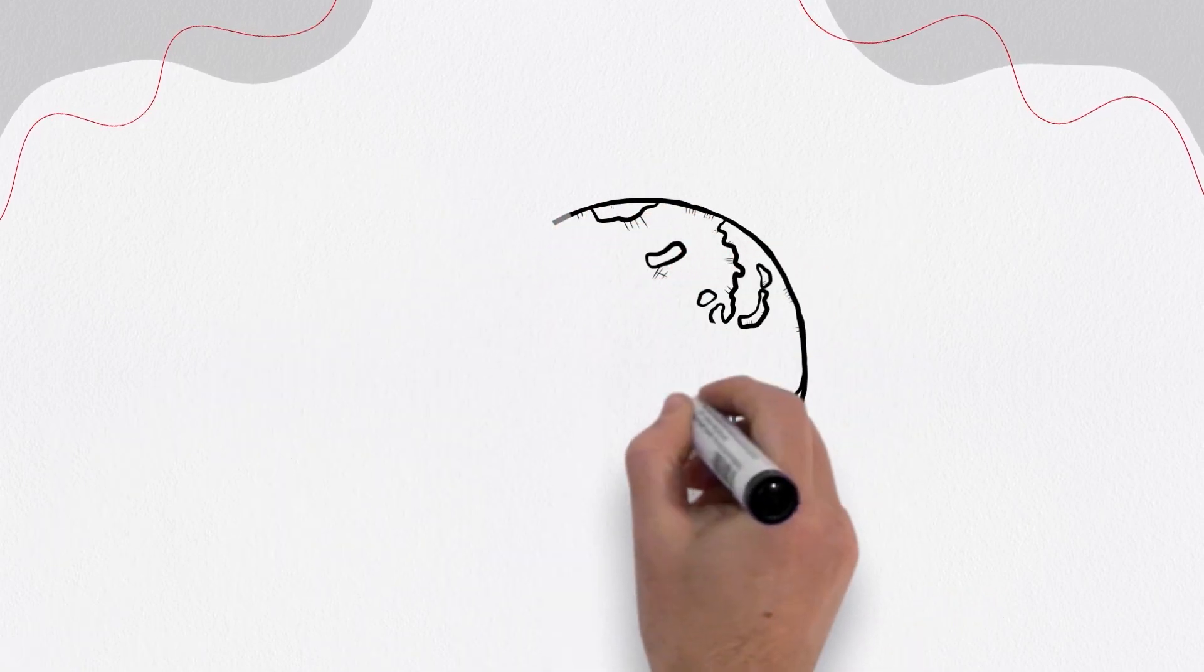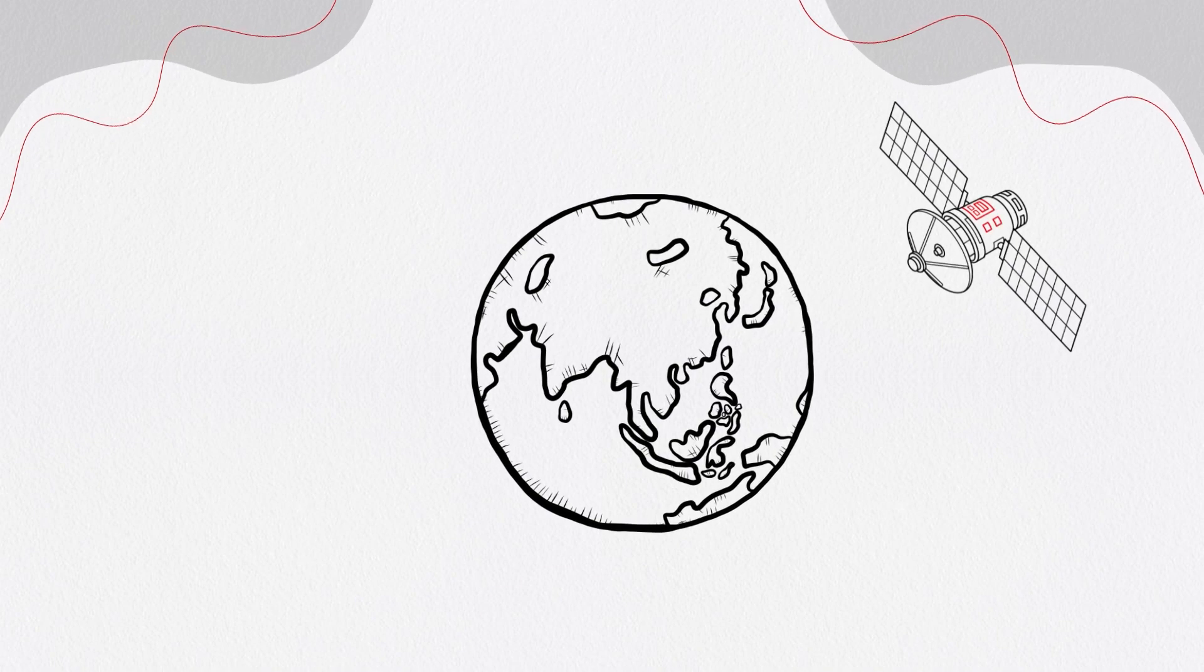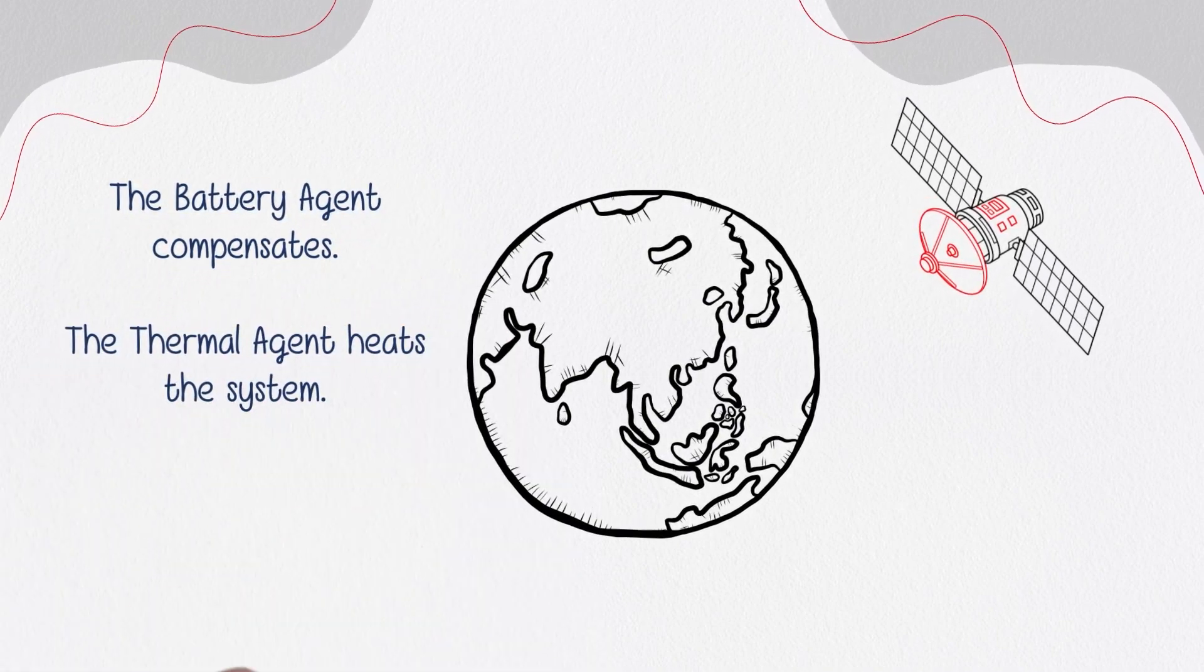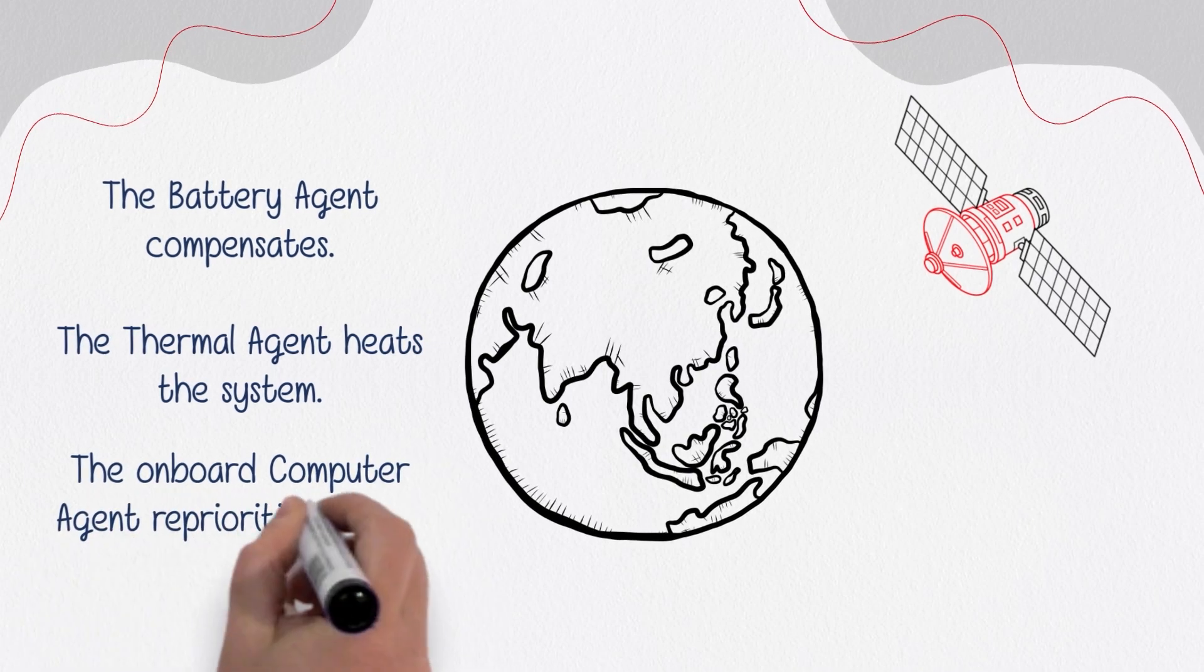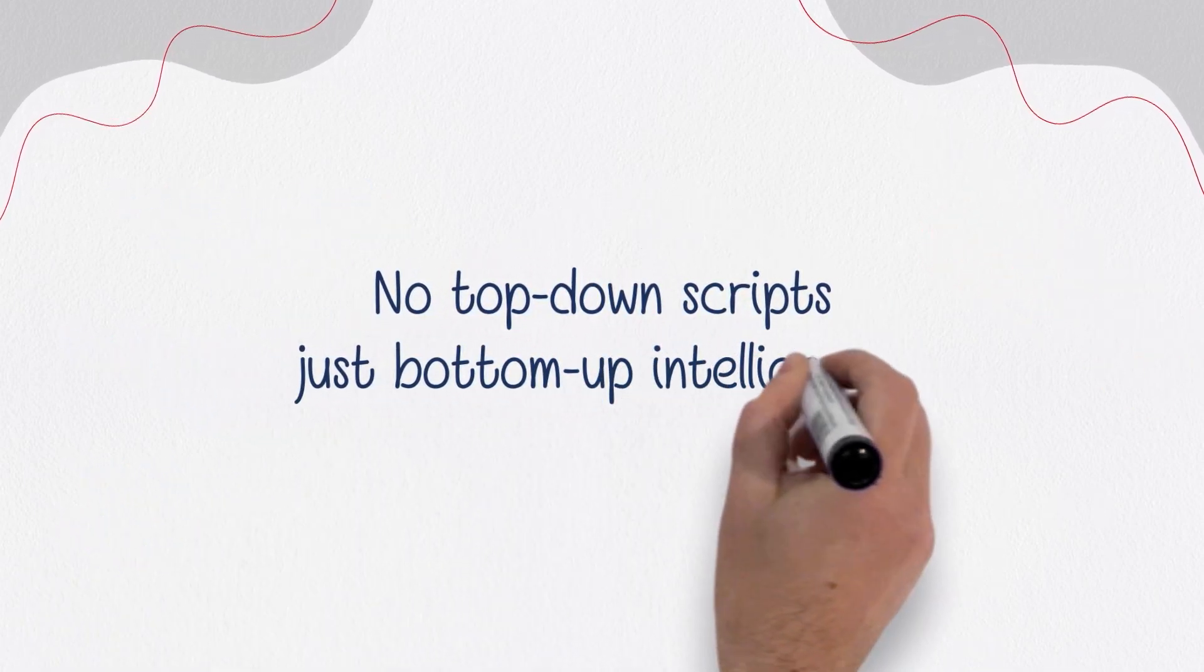When one agent adapts, say when the satellite enters an eclipse, the others respond naturally. The battery agent compensates. The thermal agent heats the system. The onboard computer agent reprioritizes tasks. No top-down scripts, just bottom-up intelligence.